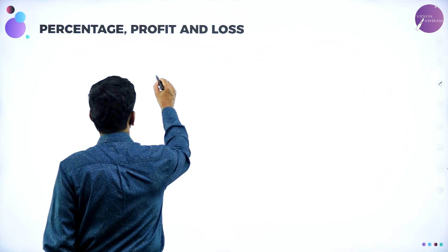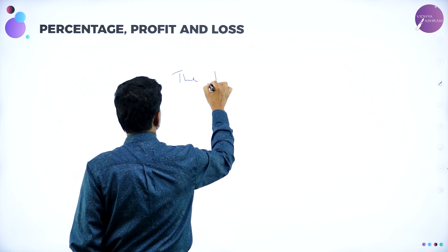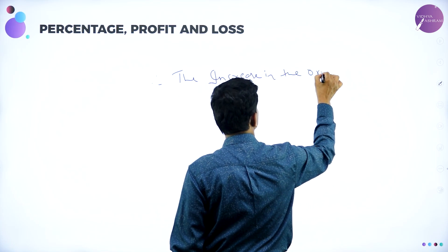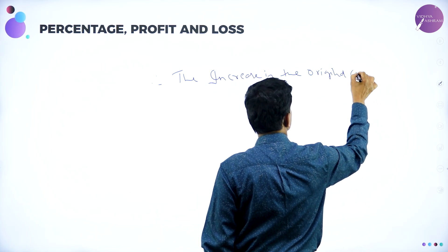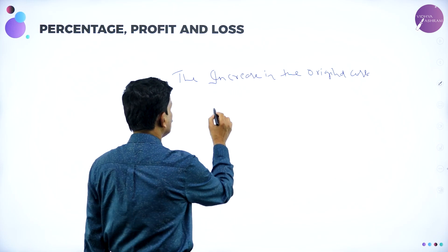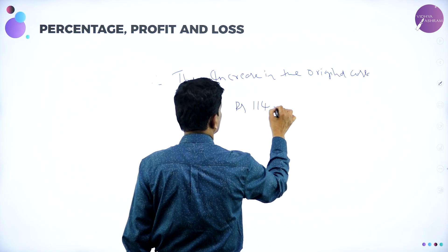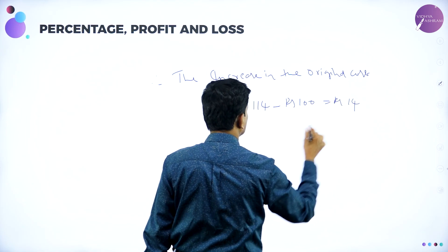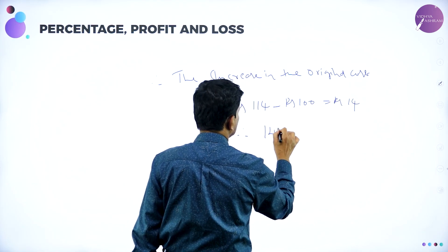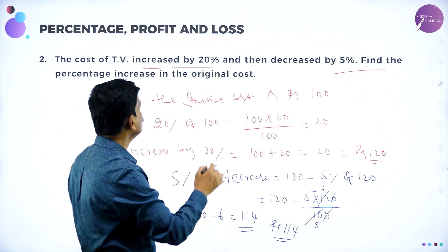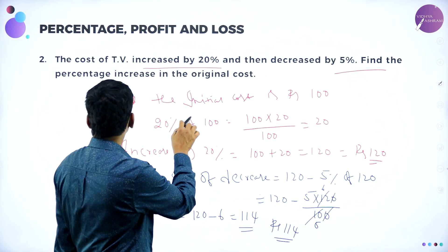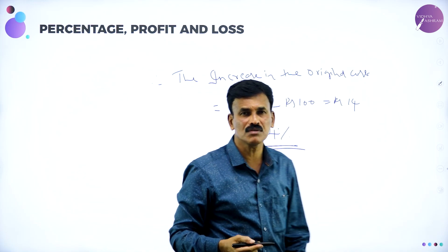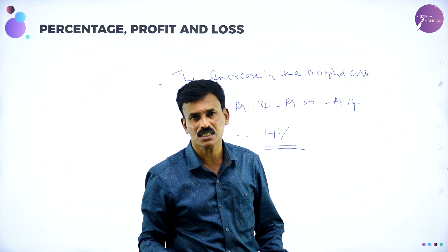Therefore the increase in the original cost is 114 minus 100, which equals rupees 14. That means the increase is 14 percent. So the percentage of increase in the original cost of the TV set is 14 percent.